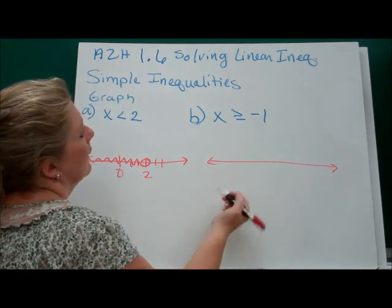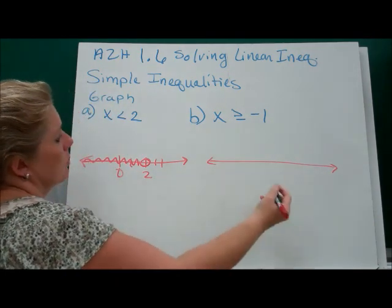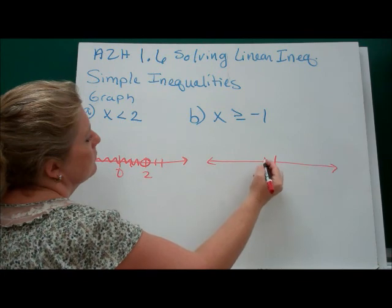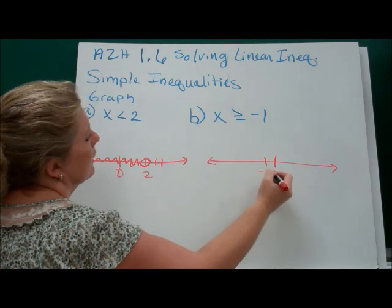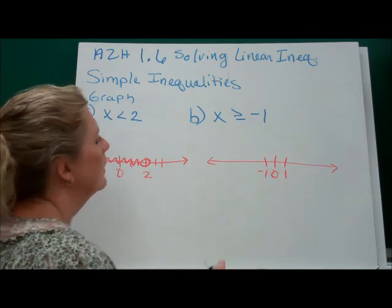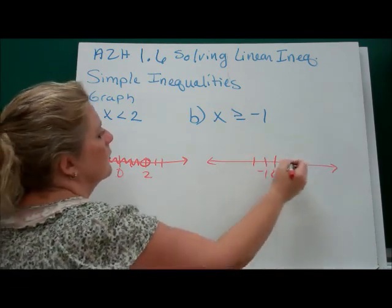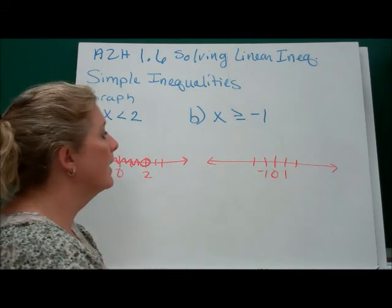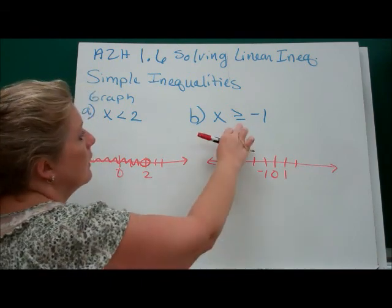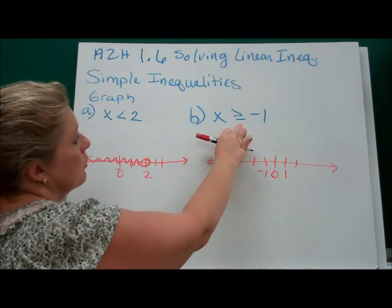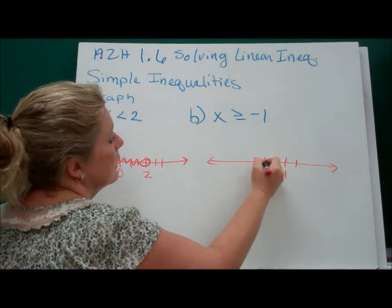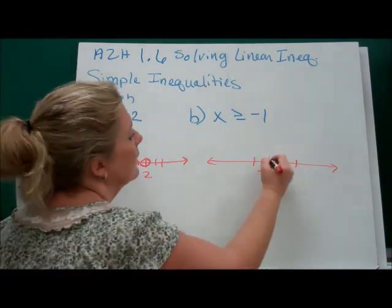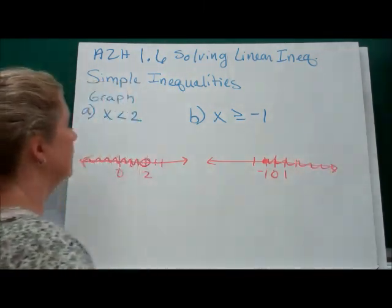B: x is greater than or equal to negative 1. So there's 0, there's negative 1, there's 1 — a couple tick marks on either side. It's greater than or equal to, so therefore it includes it. We're going to put a dot and then shade everything greater than.